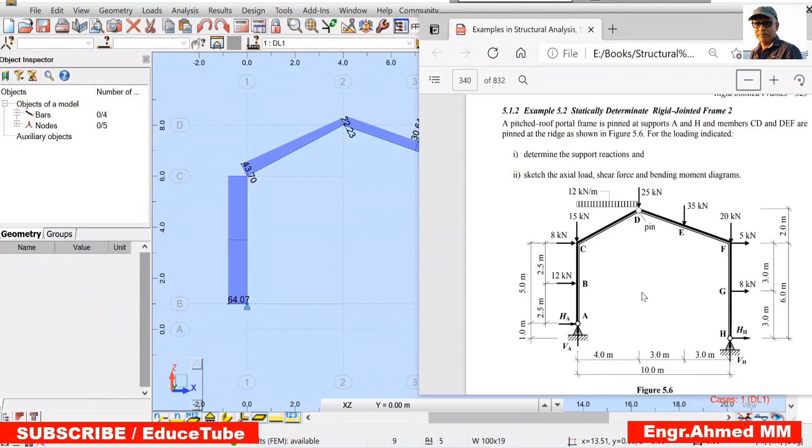I will show you how to do structural analysis for this simple structure. It is a P-strophe portal frame which is pinned at support A and H. As well, the members CD and DEF are pinned at the joint. We can see they are pinned here. There are a lot of loads shown here which are acting on bars and some are acting on the nodes. So our target is to determine the support reactions which are at A and H, as well we have to determine the value for axial load, shear force and bending moments, which will be represented as a diagram.